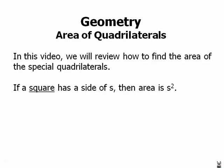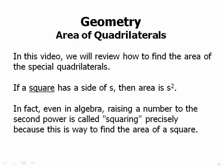First of all, the most special quadrilateral is the square. If a square has a side of s, then the area is simply s squared. In fact, even in algebra, raising a number to the second power is called squaring precisely because this is the way to find the area of a square. So the word we use in algebra actually comes from the basic geometric fact.